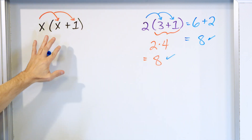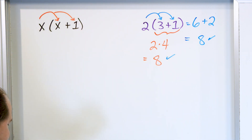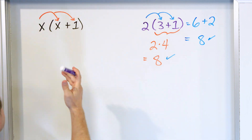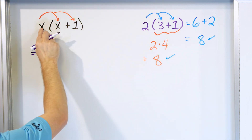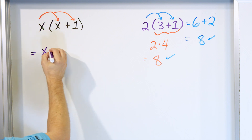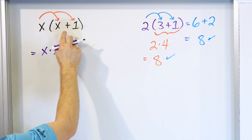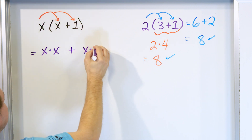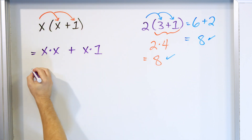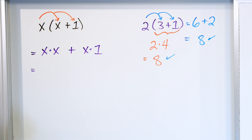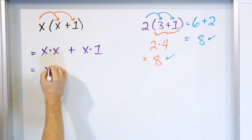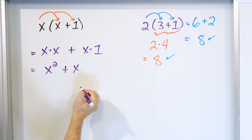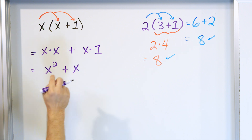So let's apply distribution to x times parentheses x plus 1. We have x times x, linked with a plus sign, and then x times 1. What is x times x? We know how to write exponents, so this is x squared. And x times 1 is just x. So we have x squared plus x.